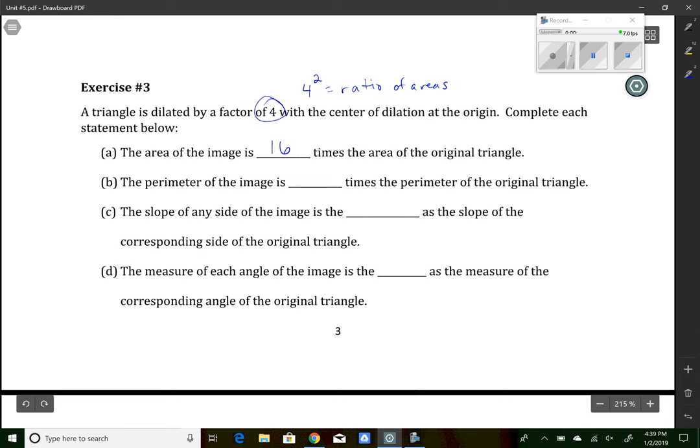Now perimeter is distance. So since I'm taking the sides and making them all 4 times bigger, the perimeter is going to be 4 times bigger.